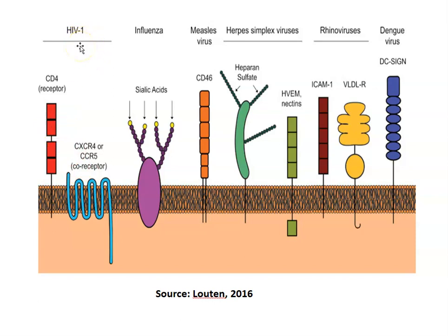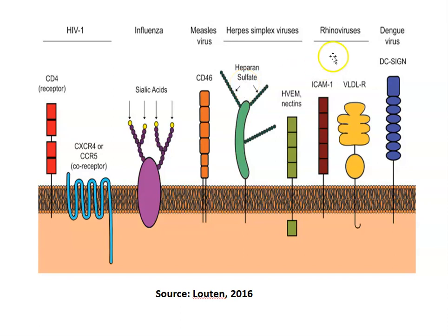For HIV-1 virus, the receptor is CD4, but for infection, HIV virus also requires coreceptors. Similarly, for influenza virus, receptor proteins are sialic acid. For measles virus, CD46. For herpes simplex viruses, heparin sulfate. For rhinoviruses, ICAM-1. And for dengue virus, DC-SIGN.